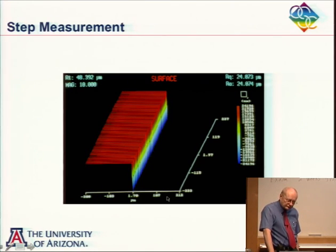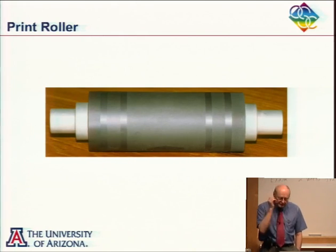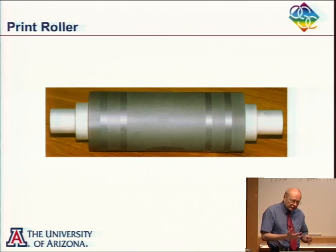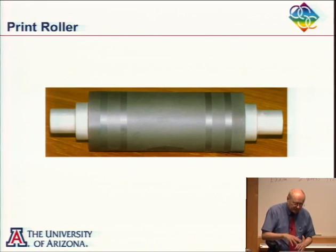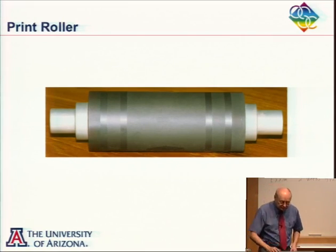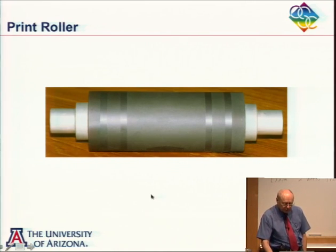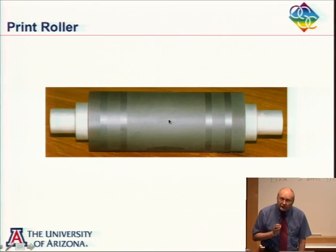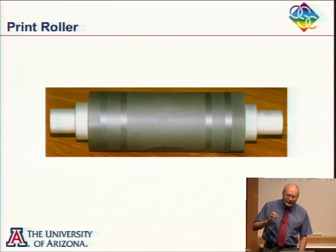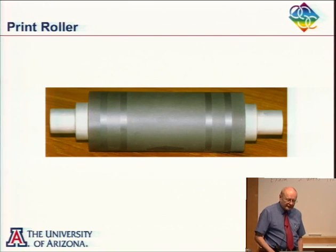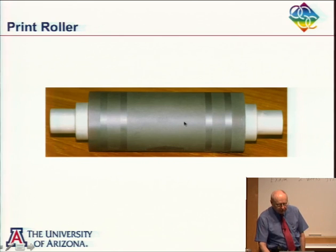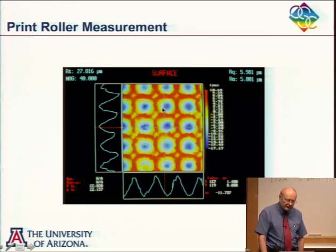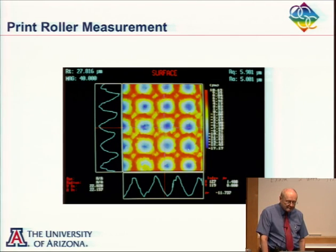You can get measurements off almost any surface, though you have to be careful with very rough surfaces where multiple scatterings can give incorrect results. This was a print roller — in the middle are little pits that hold ink during the printing process. As a print roller is used, the pits wear down and you need to measure them periodically. This was a case where you could measure quite nicely: the pits are on the order of 27 to 28 microns deep.